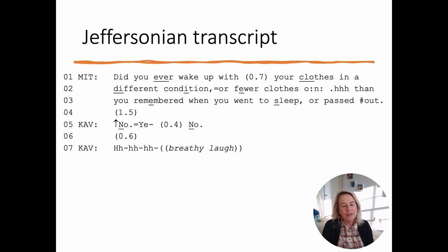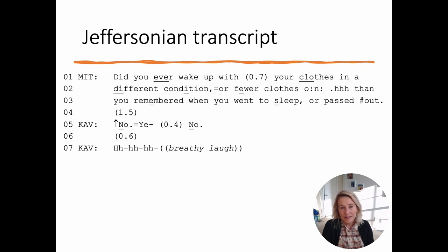The Jeffersonian transcript is not only double the length but also appears a lot more complicated. It includes numbered lines and various symbols that give us specific information about the timing and delivery of everything — and that's without adding in other relevant details like facial expressions and gaze, which we don't have time to go into in this tutorial but would typically be added into the transcript. For now, we're just focusing on sound.